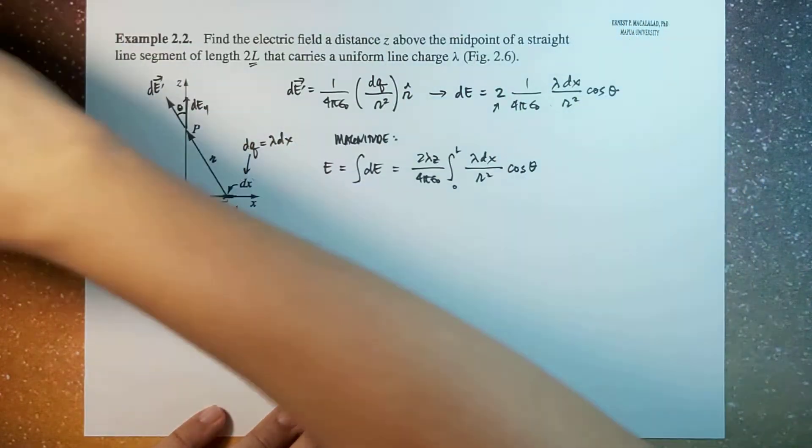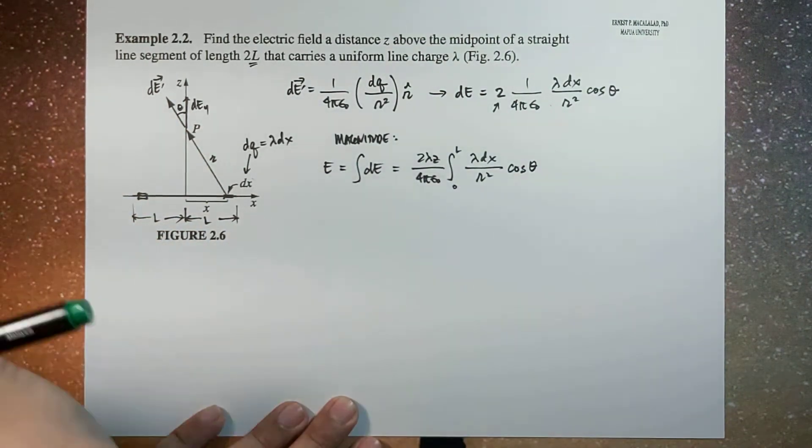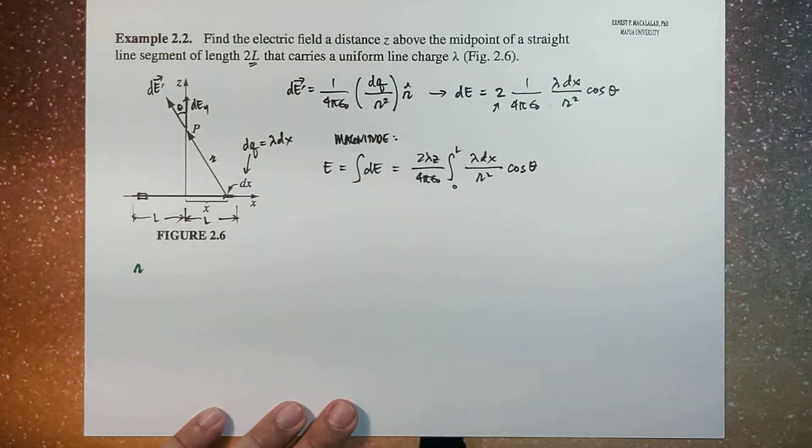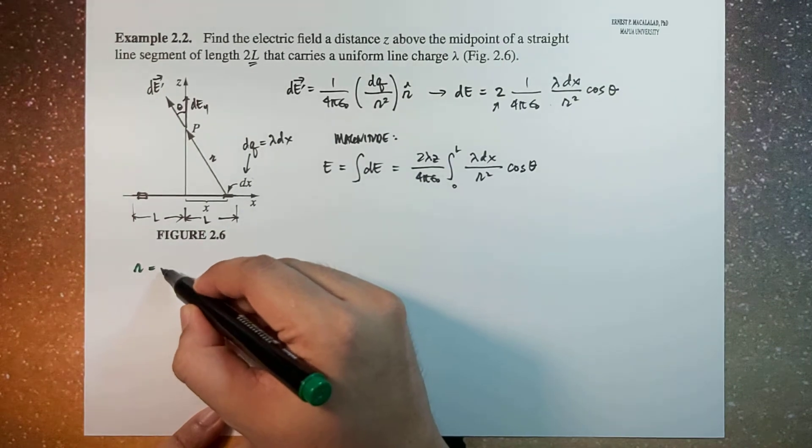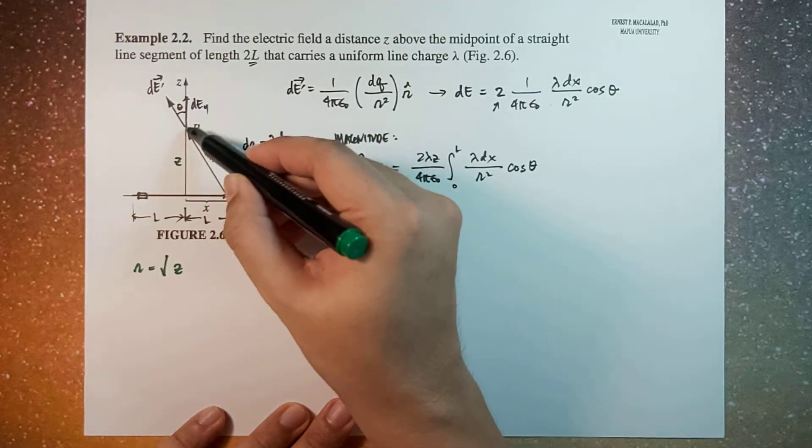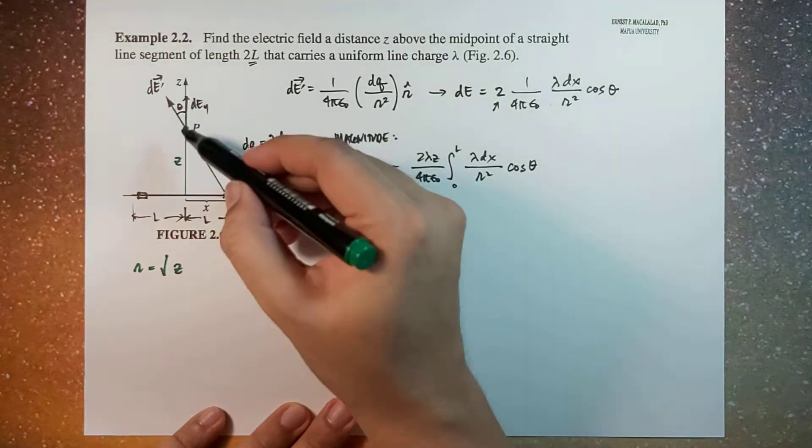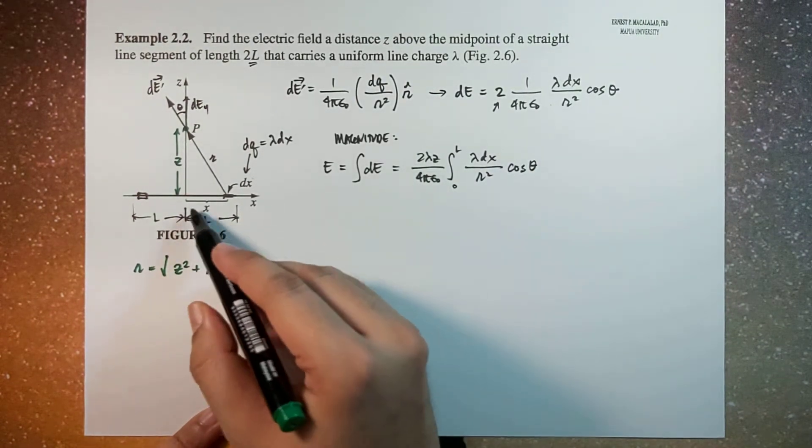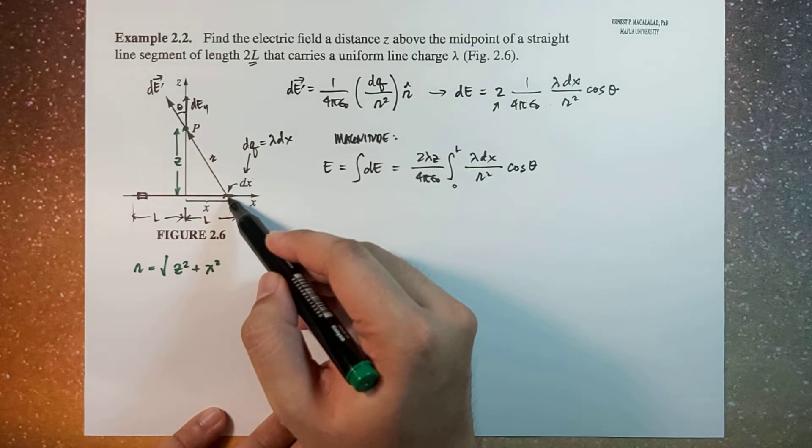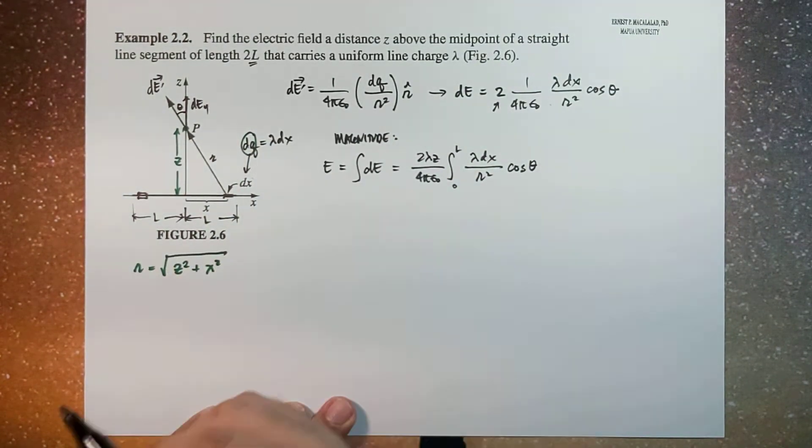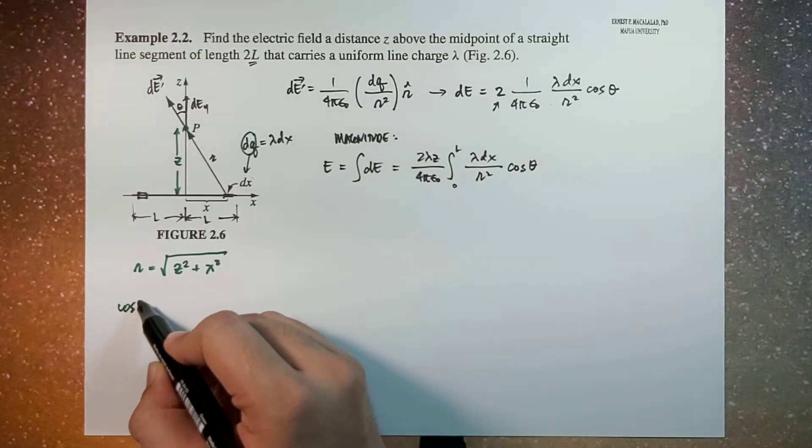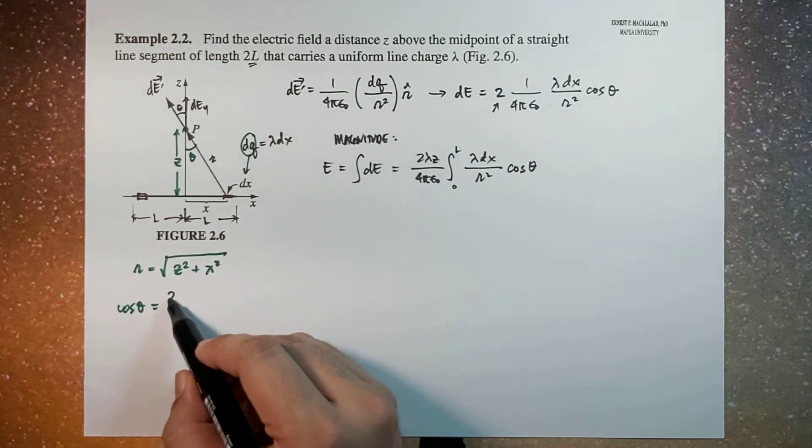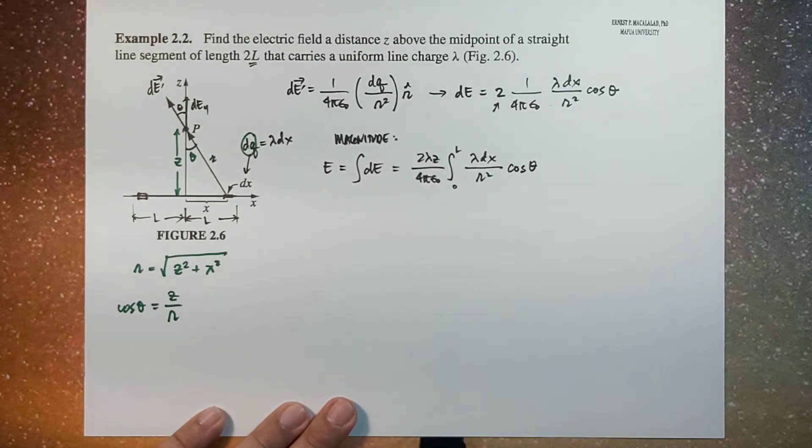However, we need to express script r and cosine theta in terms of z and x. From here we can see that script r for this infinitesimal length would be square root of z squared, because this is z, this is your point, so this is z plus x squared. x would be the distance from the origin to this infinitesimal charge dq. Therefore, cosine theta will be z over script r.